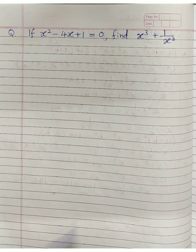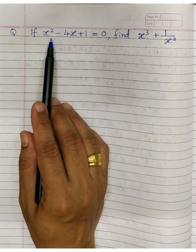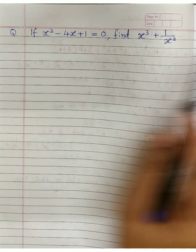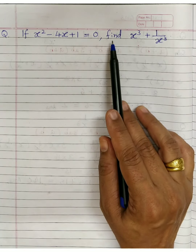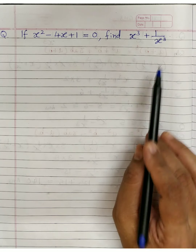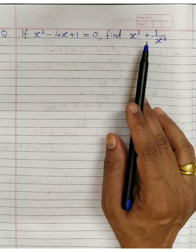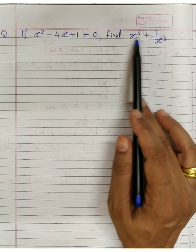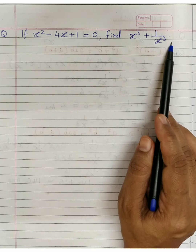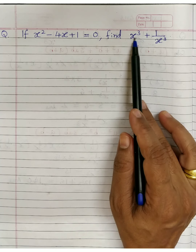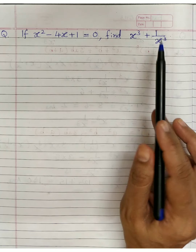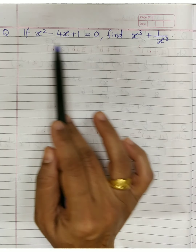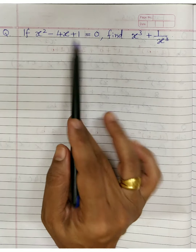Next question: if x square minus 4x plus 1 is equal to 0, find x cube plus 1 upon x cube. From the previous questions, x cube plus 1 upon x cube can be found easily if you know the value of x plus 1 upon x. Let's see if we can find that from this expression.